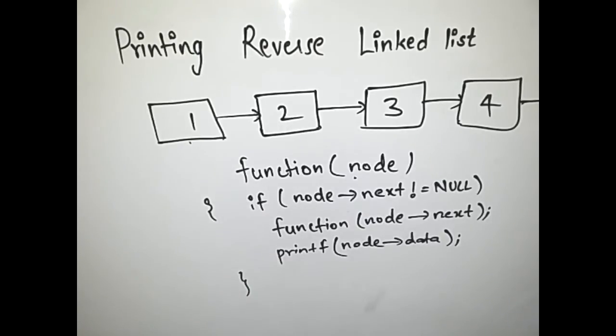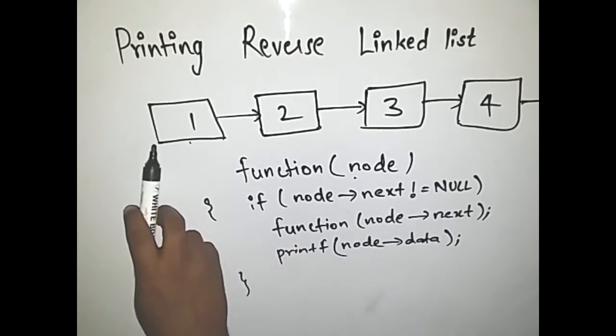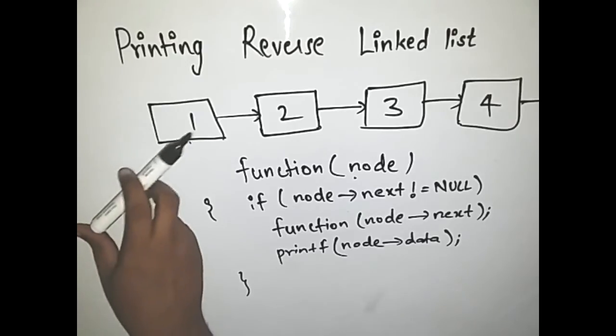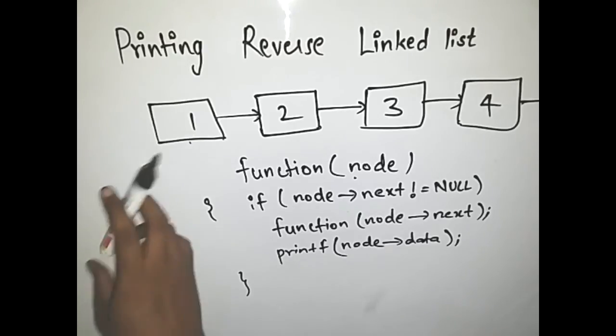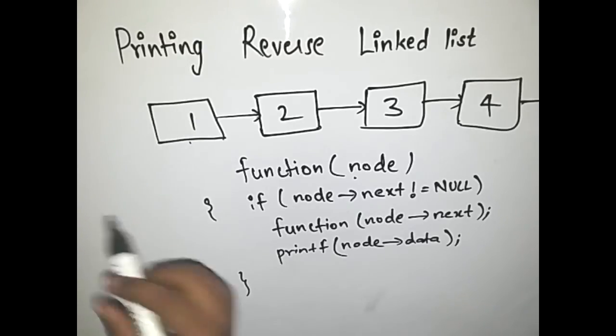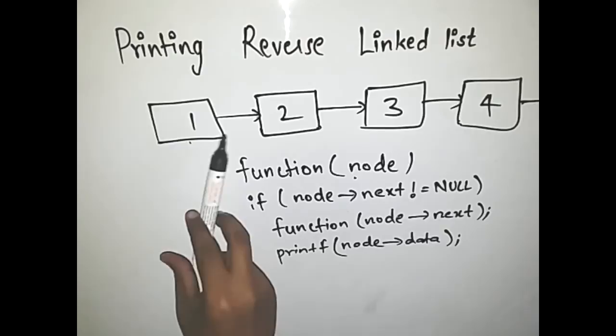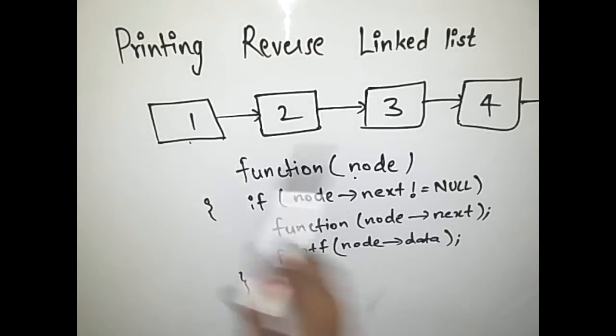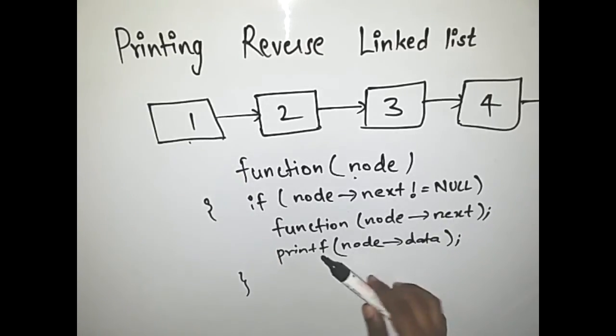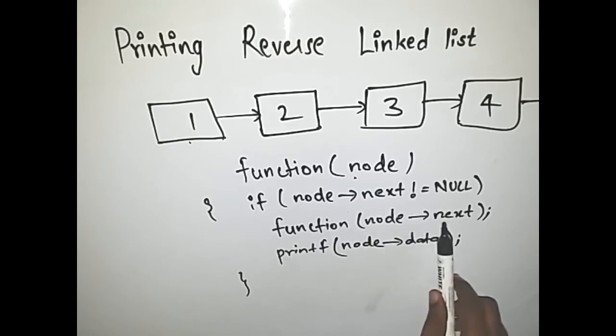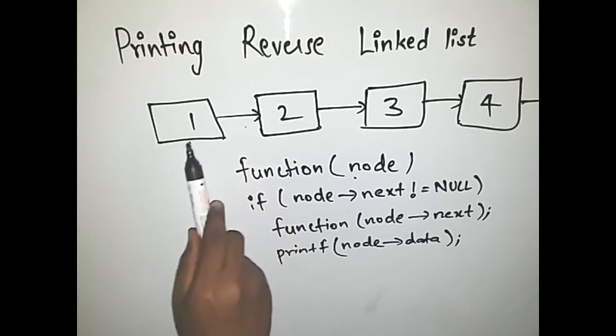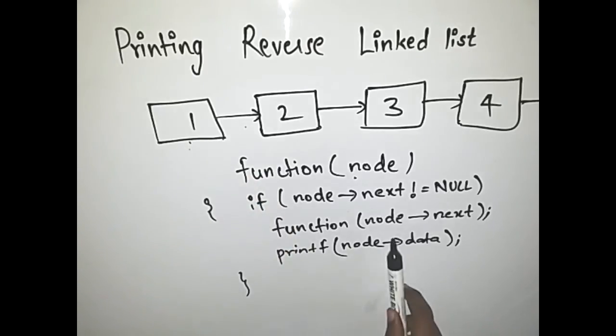In the beginning, the node is pointing to this node that has 1. So let's name it node 1. We check if node->next is equal to null or not. Here we see that node->next is not equal to null, so we go in and we make a recursive call to the same function and we give the next pointer of that node as the argument to the function.